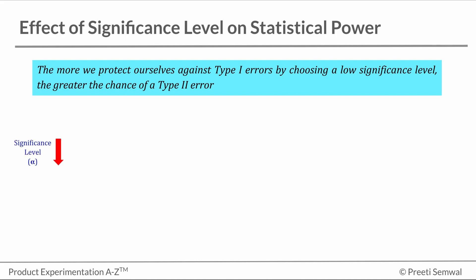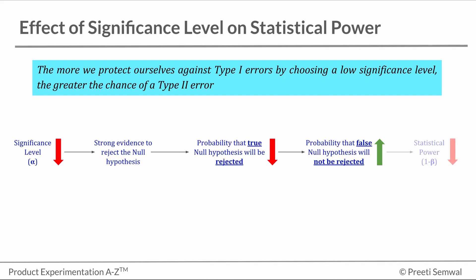When we are lowering the significance level, we are basically demanding very strong evidence to reject the null hypothesis. We are doing that so that it is very unlikely that a true null hypothesis will be rejected. However, this increases the chance that a false null hypothesis will not be rejected and thus lowering the statistical power.